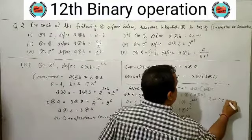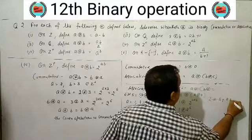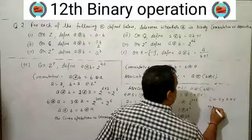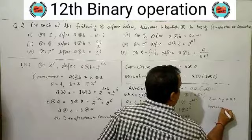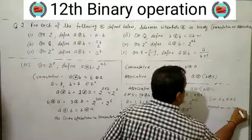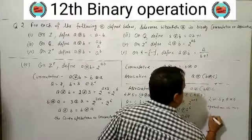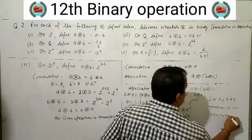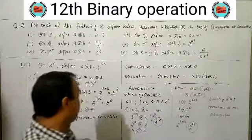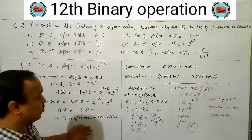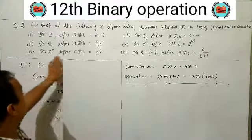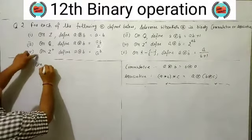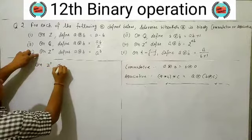Since 2^12 ≠ 2^64, left hand side is not equal to right hand side. So the operation is not associative. The operation is commutative but not associative.